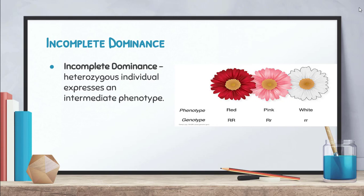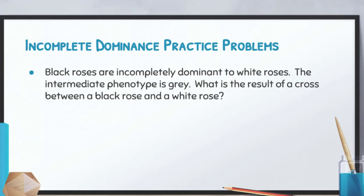It all goes back to making sure you RTFQ — read the freaking question. Let's do a practice problem. Black roses are incompletely dominant to white roses. The problem tells you what's going on and also tells you what the intermediate phenotype is, which is gray.